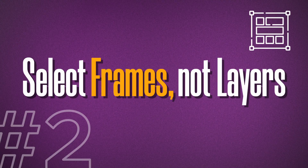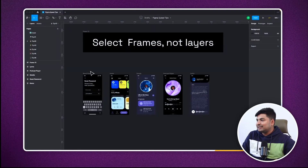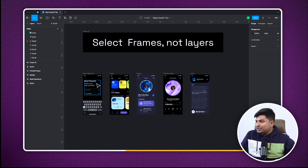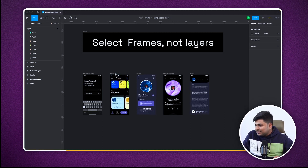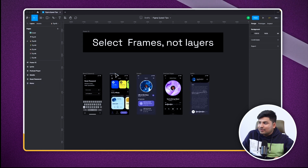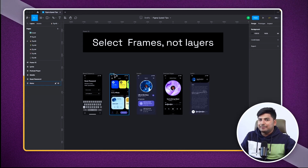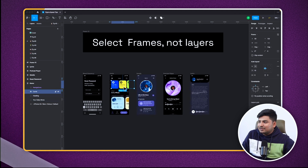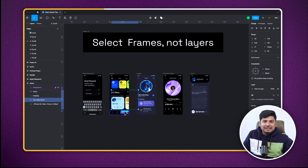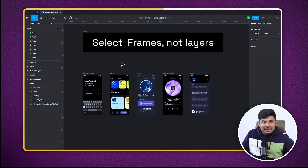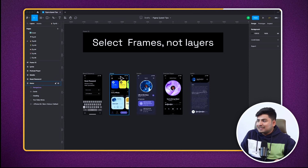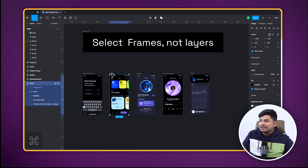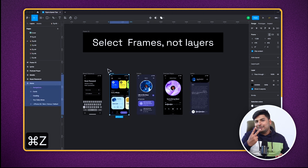Let's move on to tip number two. I'll show you how to select a frame. While selecting a frame, it can be very difficult. If you're trying to select a frame, you'll have to exactly click on it and sometimes you might miss it. If you click inside the frame, you might be selecting auto layouts, layers, groups, and things like that. Here is an easy tip: press Command and click on the screen and you will be able to select the entire frame. This is tip number two.